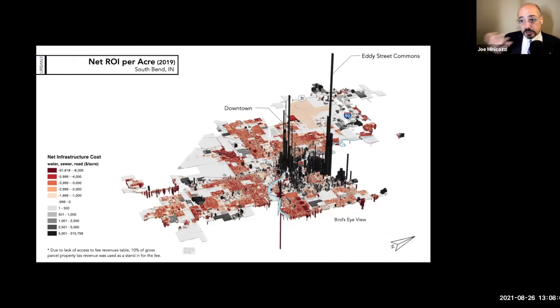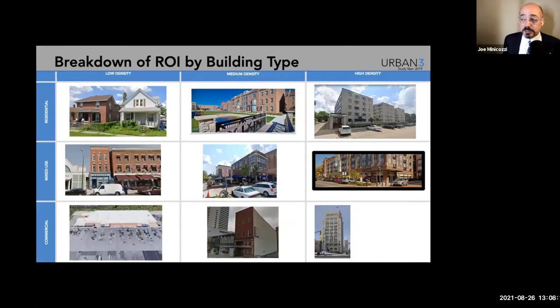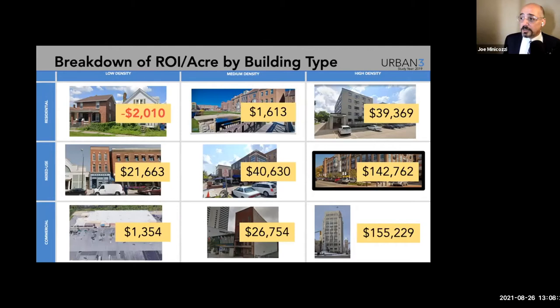This is the simplest way of looking at it. We call this the Brady Bunch slide — it's basically residential low, medium, and high density; mixed use low, medium, and high; and commercial low, medium, and high density. These are actual buildings in South Bend and these are their sticker prices. Right away, we can see that a single-family detached house on average is losing about $2,000 per acre per typology. So the more that you do of it, just make sure you have more of the other stuff that's net positive to compensate for it.